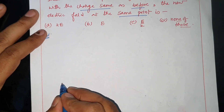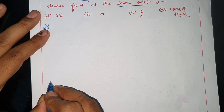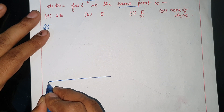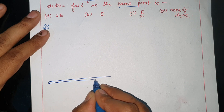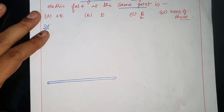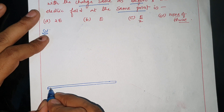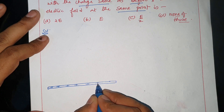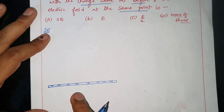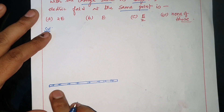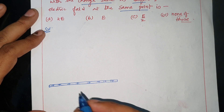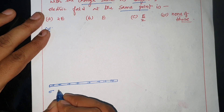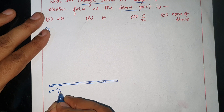First, we have a thin, long non-conducting sheet. The charge is on the surface, on one side — a single layer of charge. The surface charge density is sigma (σ), in coulombs per square meter.